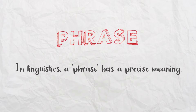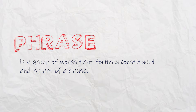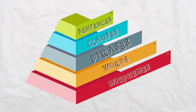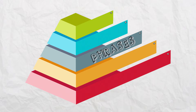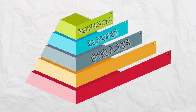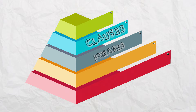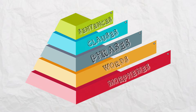In linguistics, a phrase has a more precise meaning. There are different ways in which you can define a phrase. A phrase is any group of words that form a constituent and it's part of a clause. In the five-level hierarchy in syntax, the highest level is sentence, then clause, then phrase, then word, and then morpheme. Phrases are two levels below sentence — phrases become part of clauses, and clauses constitute sentences.